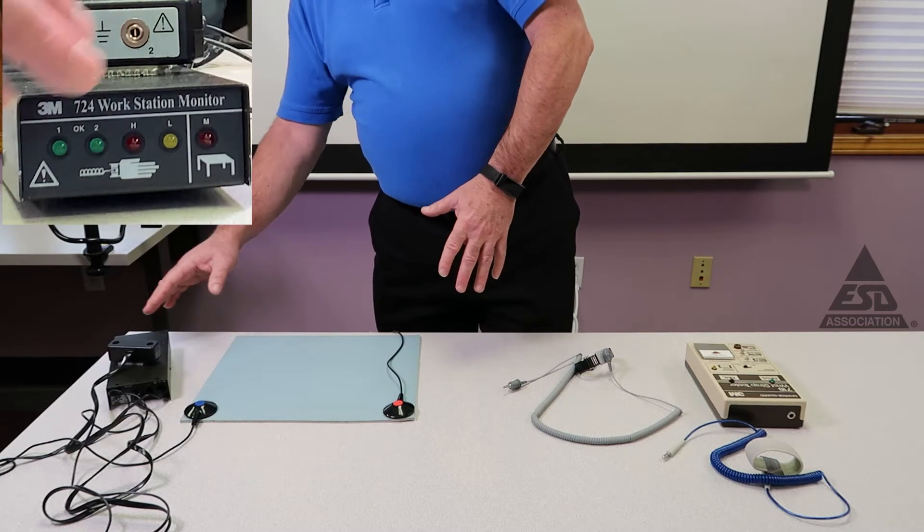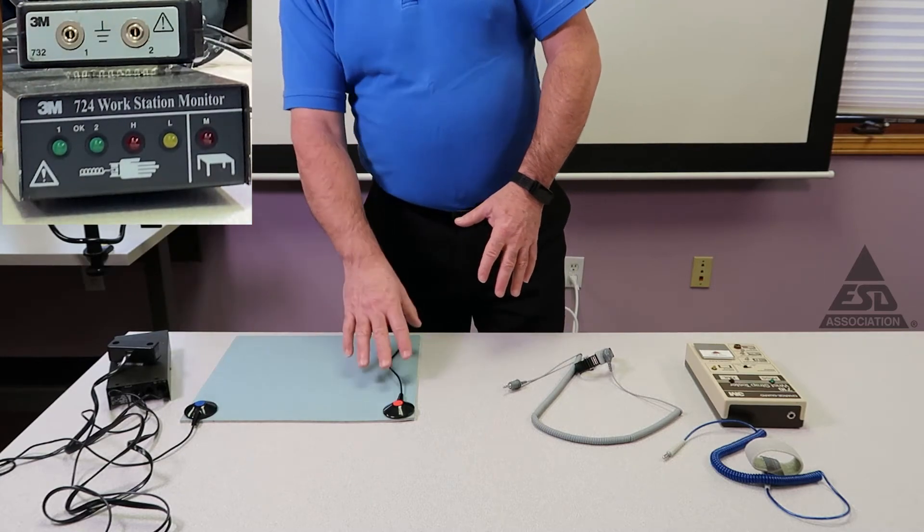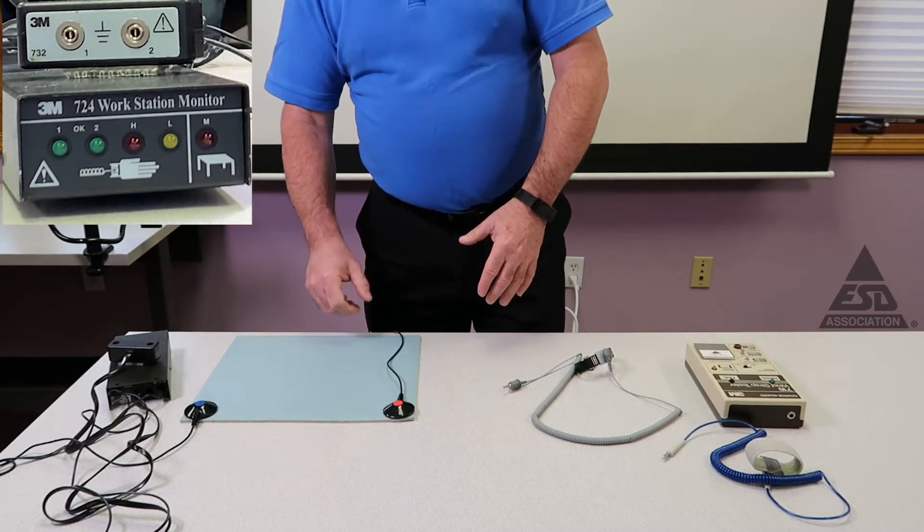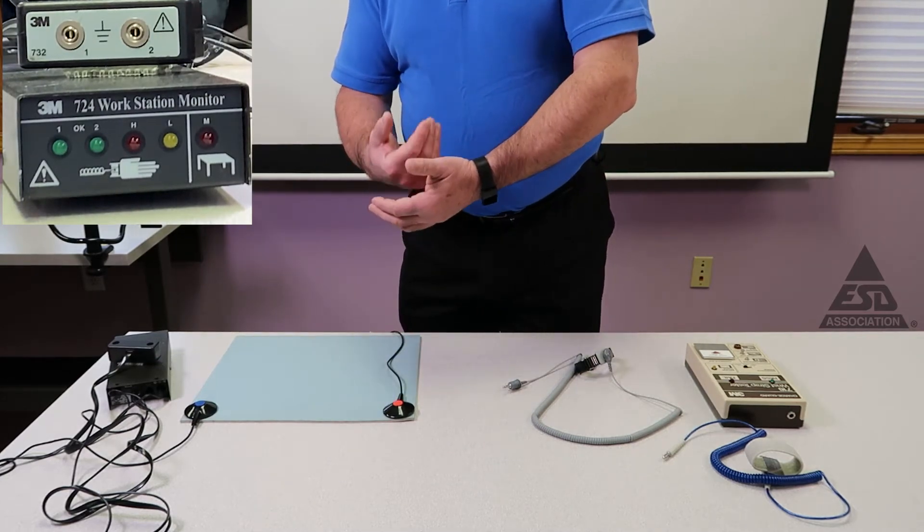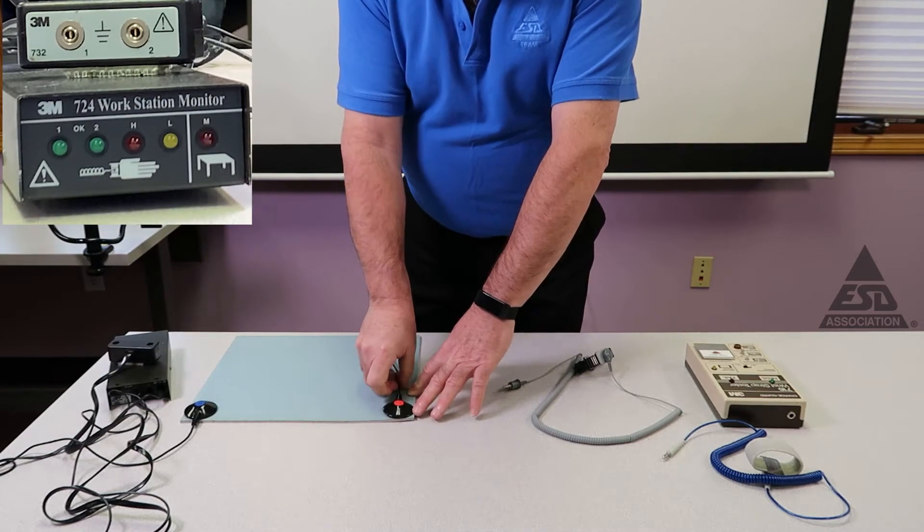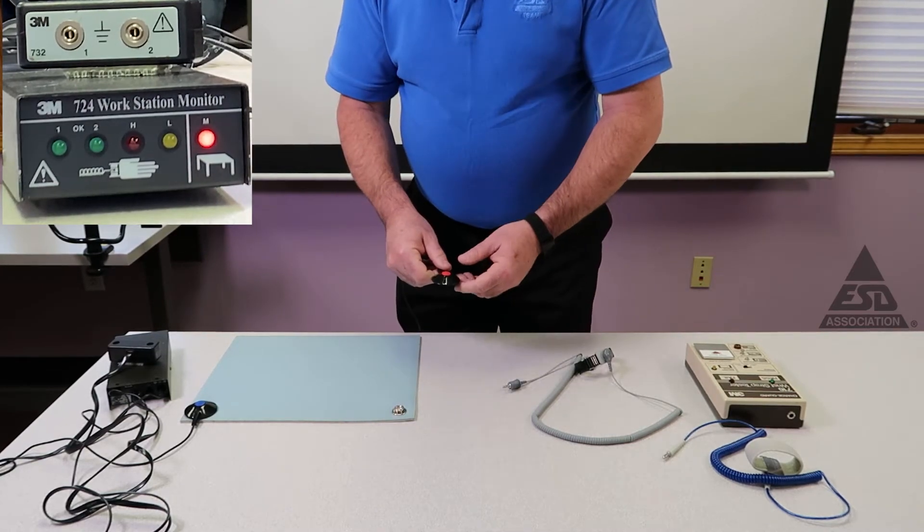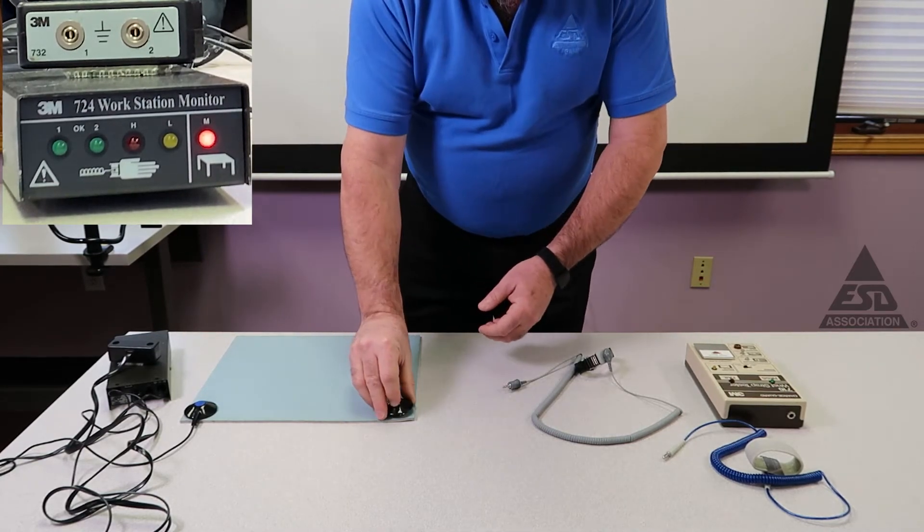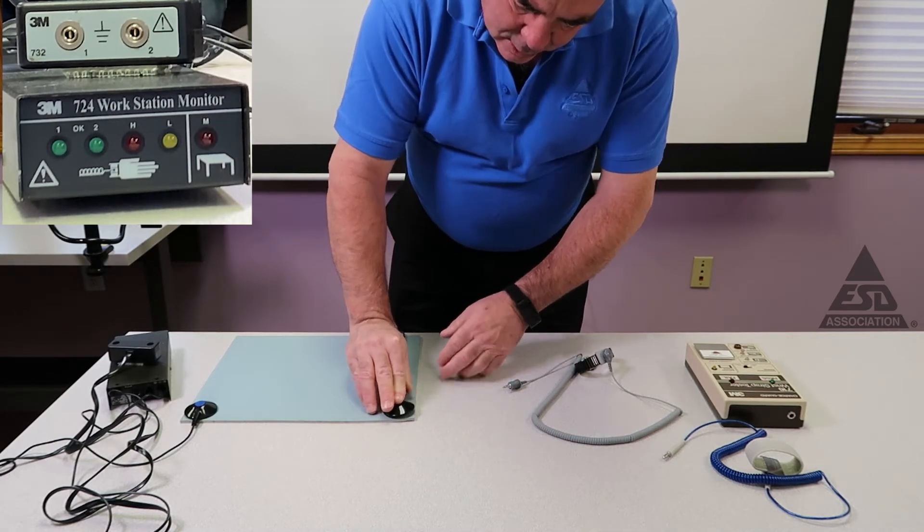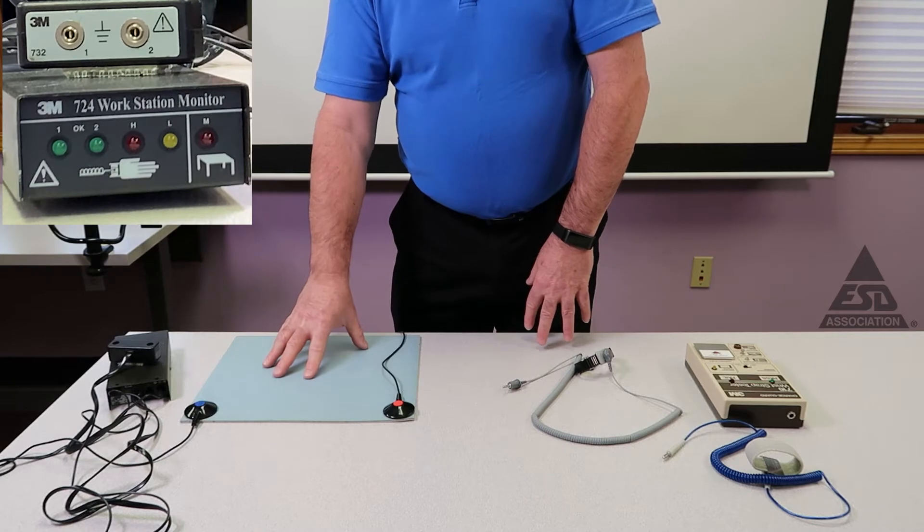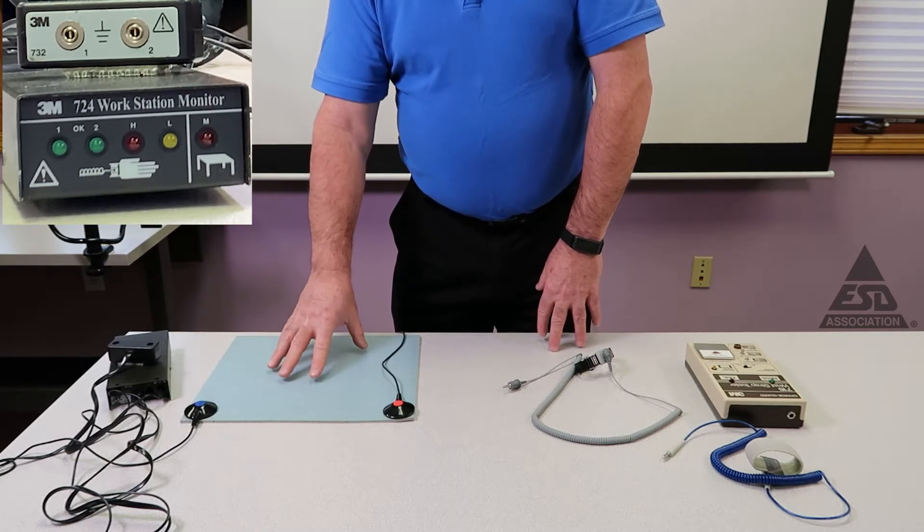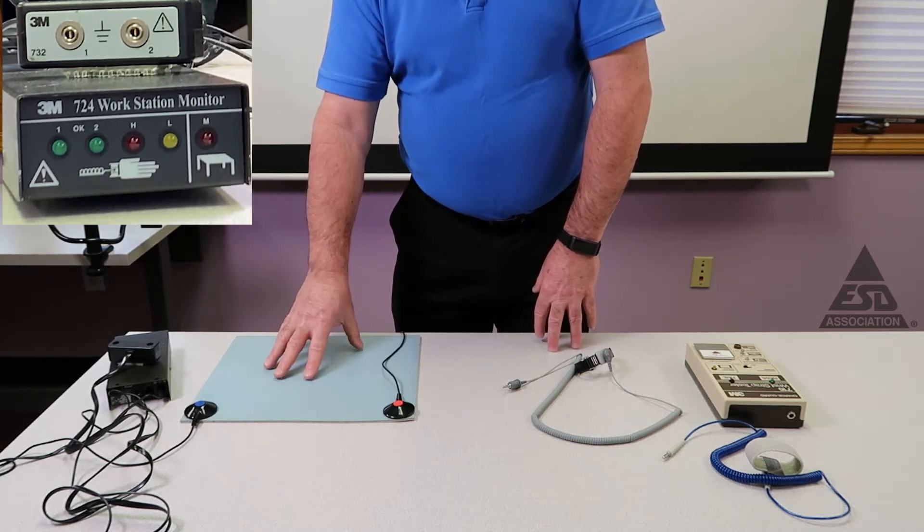Right now, there's no lights on and the workstation is connected. If I disconnect ground, this should alarm and tell us we have a fault. So I'm going to disconnect it. You'll see the red light come on and you'll hear the audible alarm. That monitors the connection to ground. It does not monitor the surface, so you still have to do your testing of the work surfaces like you normally would do.